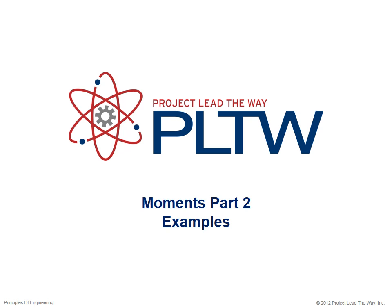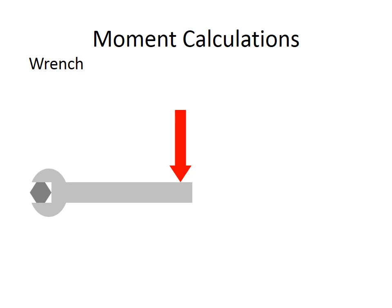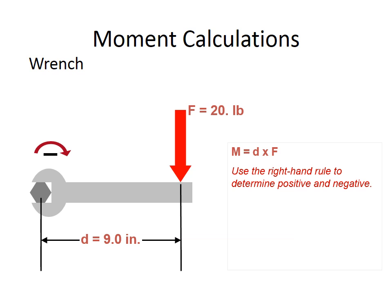So here's our trusty wrench again and we have a force applied. Our force for this example is going to be 20 pounds and we're going to use this 20 pounds pretty much throughout. What we're going to do is change this wrench and see how it affects our moment examples. So we have a 20 pound force applied at 9 inches from the pivot point. When we apply our moment formula d cross f, we want to make sure that we determine whether it's positive or negative using the right hand rule. This force is going to tend to rotate this in the clockwise direction, which means it is negative.